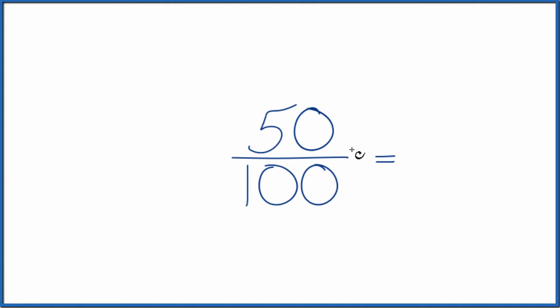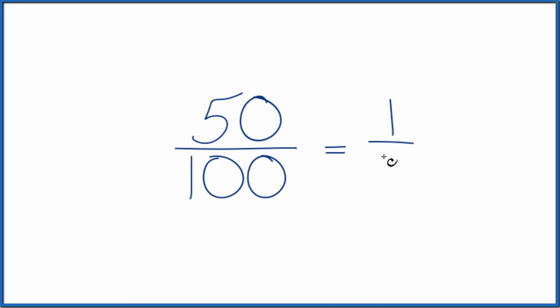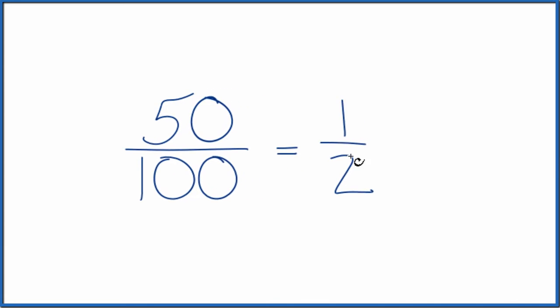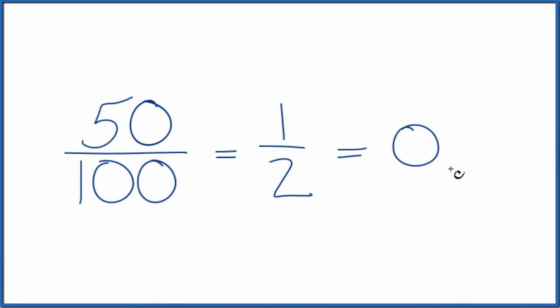that's really just one half. We have fifty goes into itself one time, and fifty goes into one hundred two. And you might know that one half is equal to the decimal zero point five. That's one way to do it.